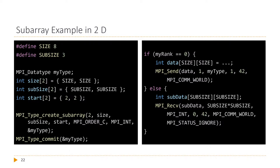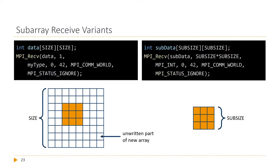After creating the type we commit it and use it for send-receive operations. On the send side we use my type, but on the receiving side we can receive integers directly — specifically subsize squared integers. If we receive as multiple integers, we get just the array that was transmitted, contiguously. If we receive using my type, we get the data written only into the orange part of a larger buffer, with the rest undefined. Which variant you choose depends on your use case — perhaps the remaining data is initialized already or added later.